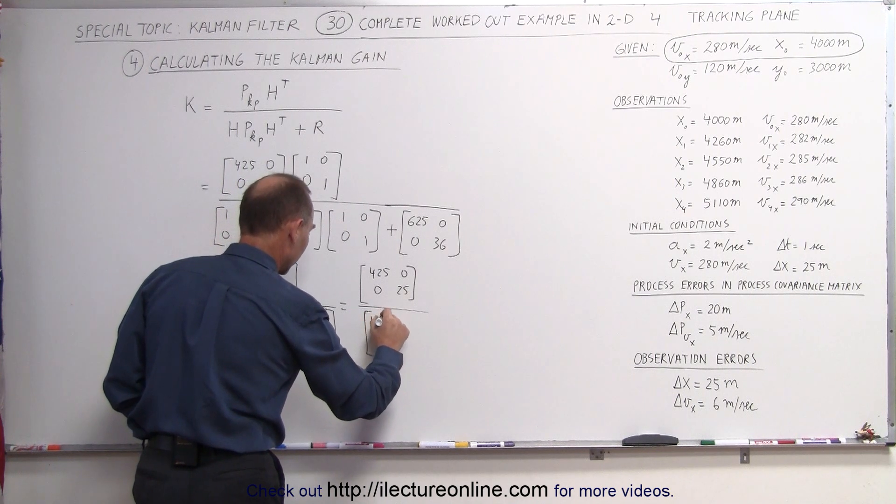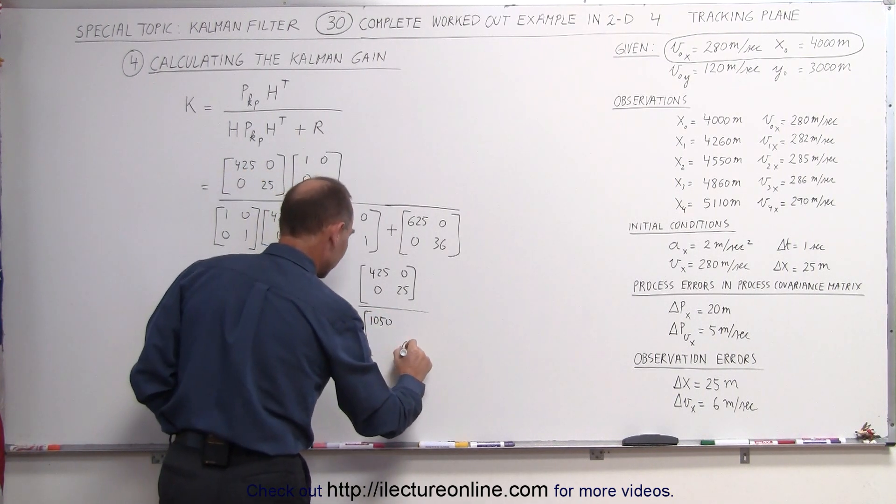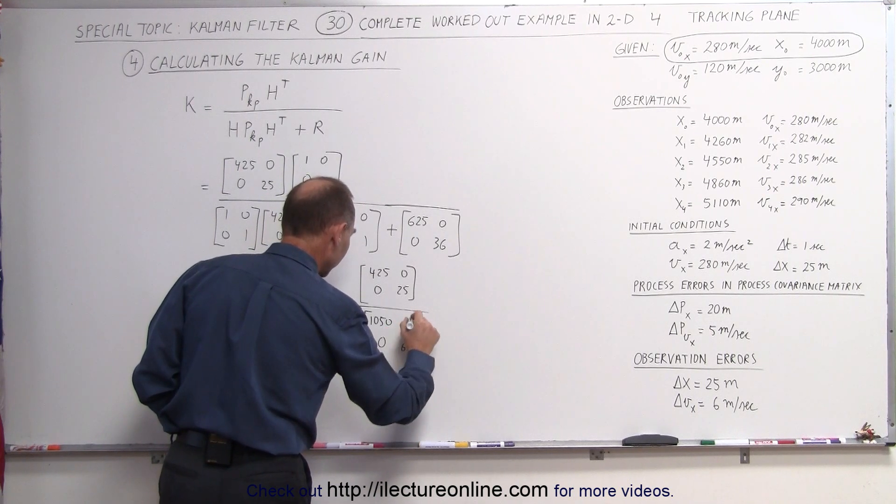In the upper left corner, and 25 plus 36 that gives us 61 here, 0 and 0.